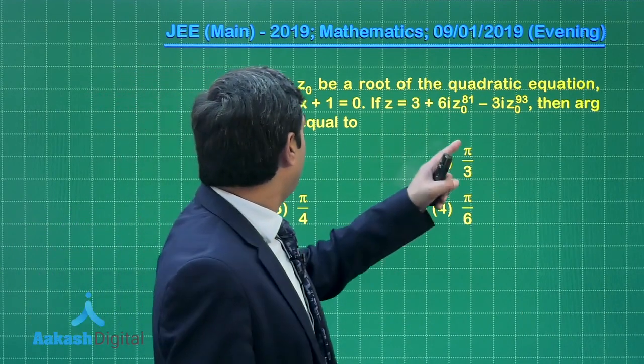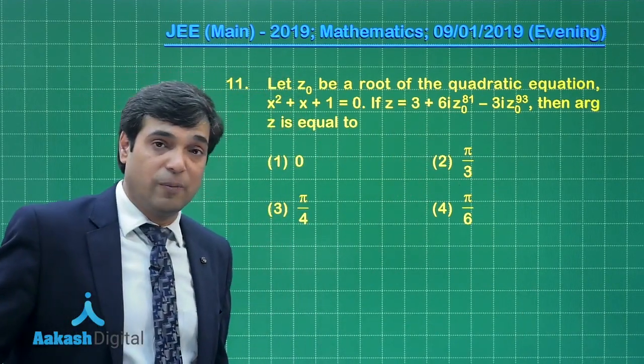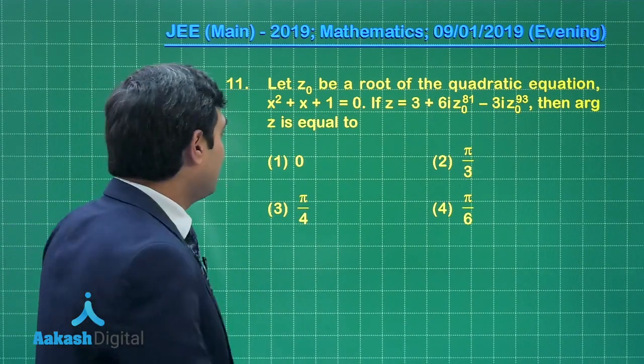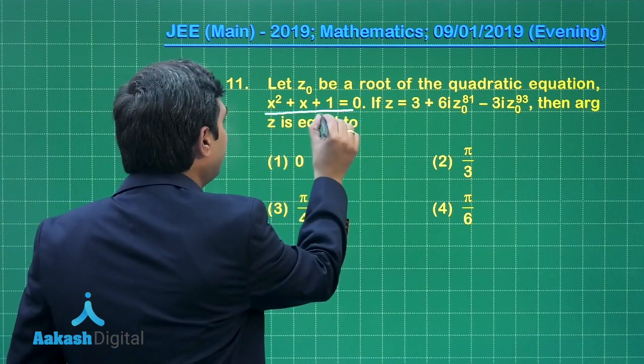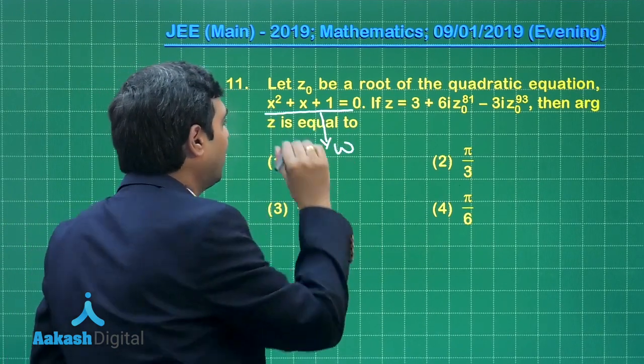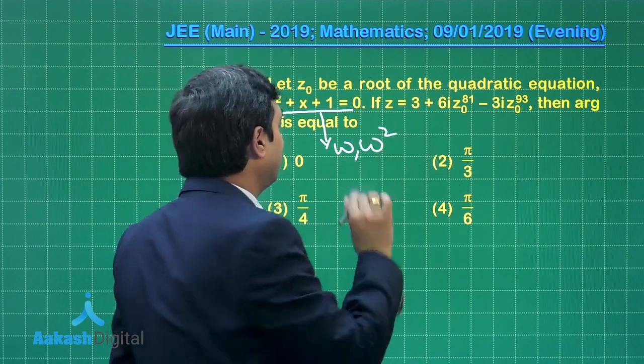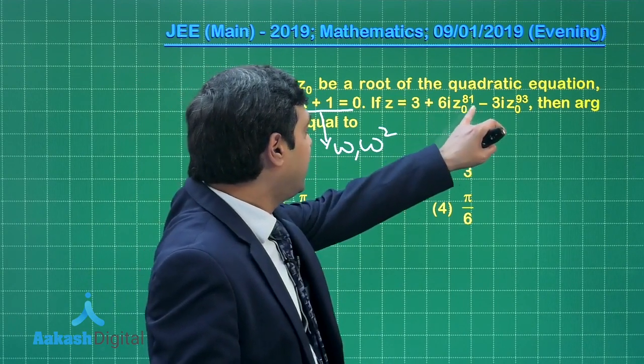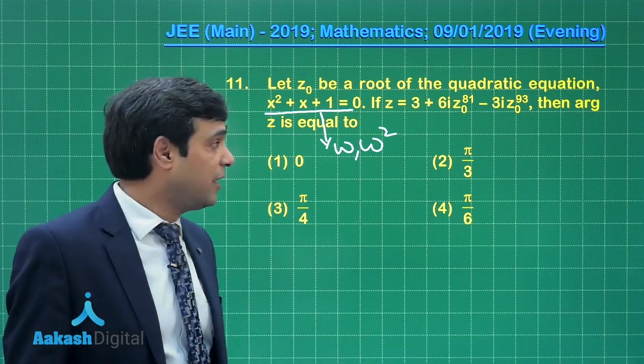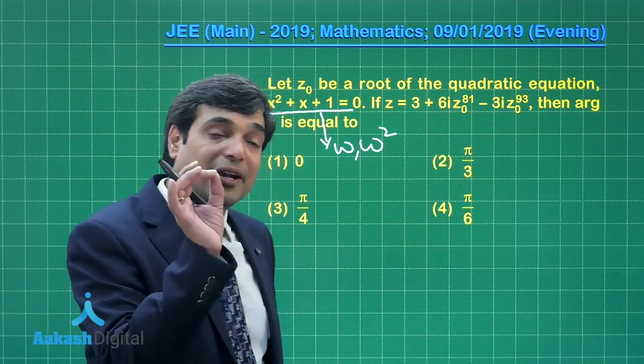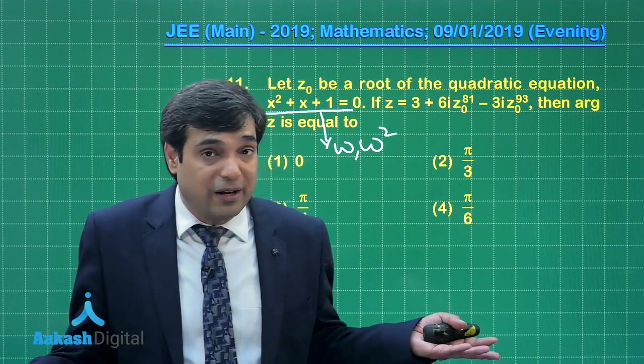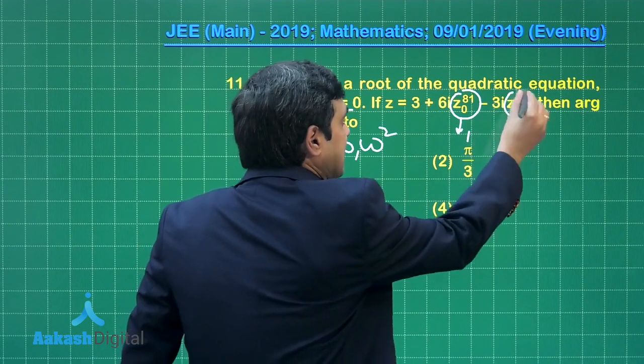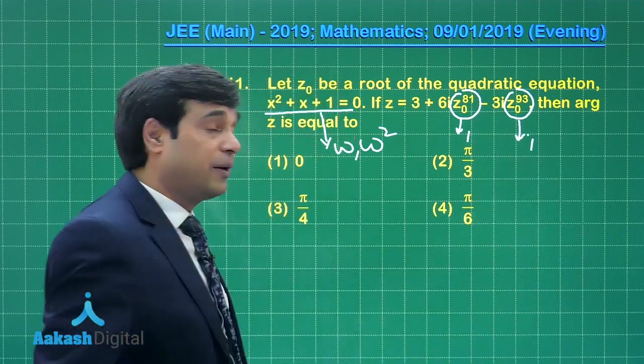If z₀ is the root of the quadratic equation x² + x + 1 = 0, what are the roots of this equation? ω and ω², where ω is the cube root of unity. So it is a simple one. The root for this one is clearly ω or ω². Now if z = 3 + 6i·z₀⁸¹ - 3i·z₀⁹³, you can see 81, 93 both are multiples of 3, meaning ω³ = 1. So z₀⁸¹, this is 1. z₀⁹³, this is also 1.